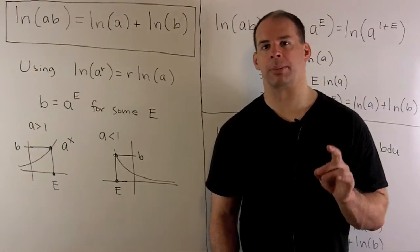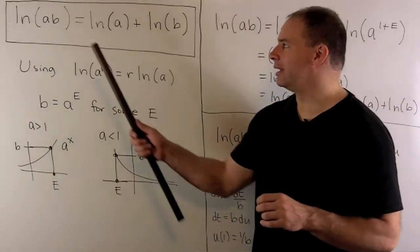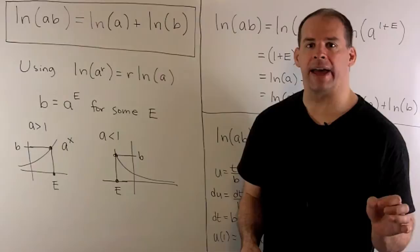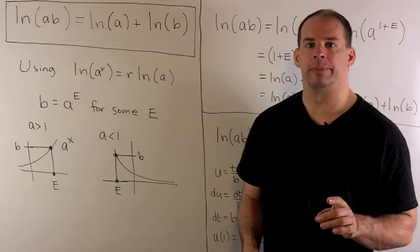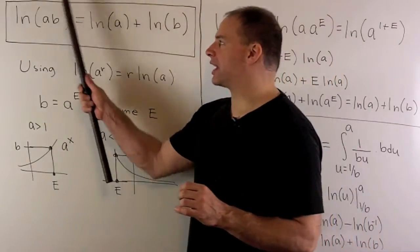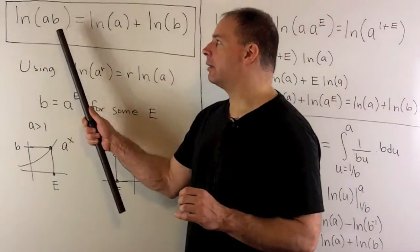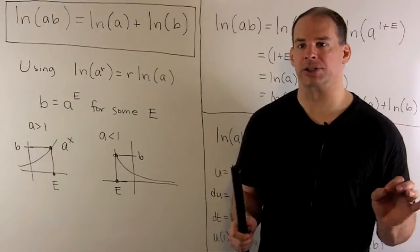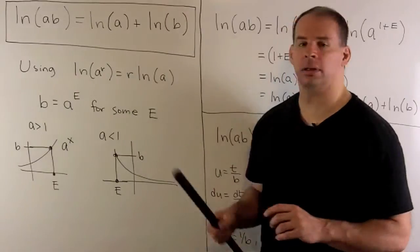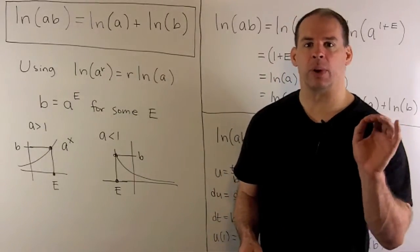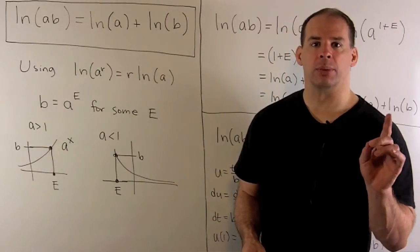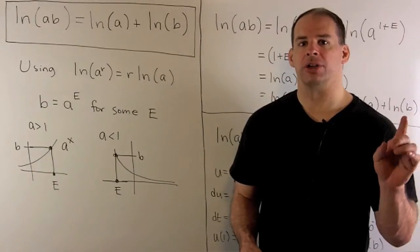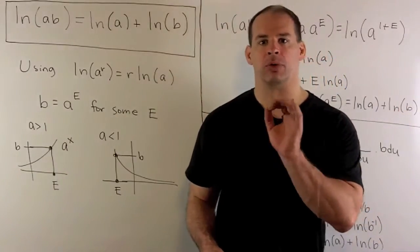For our next property, we have natural log of a times b equals natural log of a plus natural log of b. So if we have a product inside natural log, we can split it up as a sum of each term. We're actually going to have three ways to show this. Before we do it off the definition, let's show it using the property we proved before.